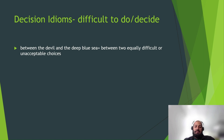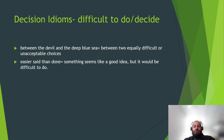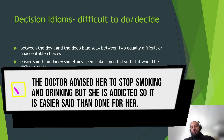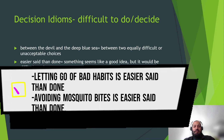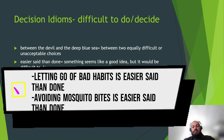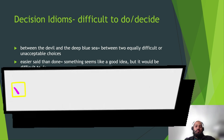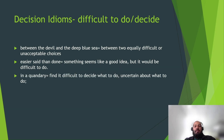Another decision idiom is 'easier said than done' — talking about something seems like a good idea but actually doing it is difficult. For example: 'The doctor advised her to stop smoking and drinking, but she's addicted, so it is easier said than done for her.' Or: 'Letting go of bad habits is easier said than done.' 'We talk about reducing costs but it is easier said than done.' So whenever you want to achieve something but it proves difficult, you can use this idiom.